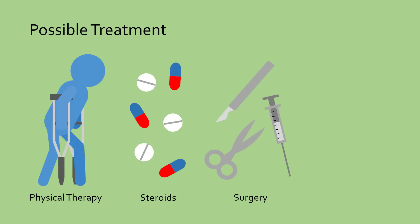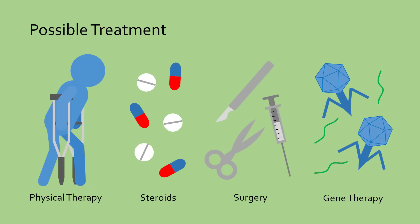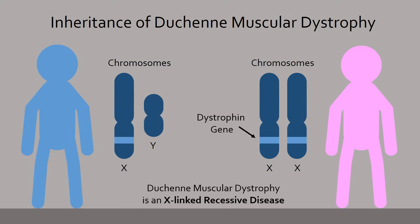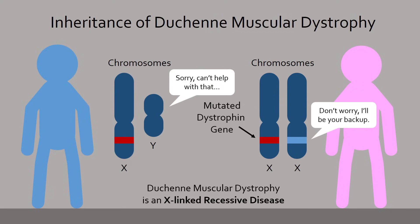Current research aims to cure DMD by directly manipulating the dysfunctional dystrophin gene. To understand how these techniques work, we must first understand the characteristics of the dystrophin gene. The dystrophin gene is located on the X chromosome, making DMD an X-linked recessive disease affecting mostly males. Females have two X chromosomes, while males only have one X and one Y chromosome. Therefore, if a female has a mutation in one of her X chromosomes, the other acts as a backup — which is not the case for males, since the Y chromosome does not have the dystrophin gene.